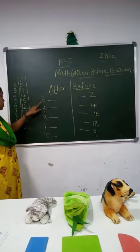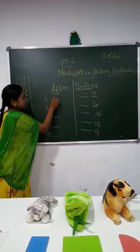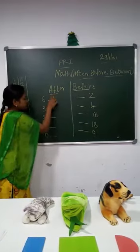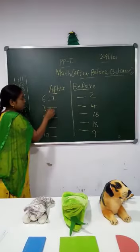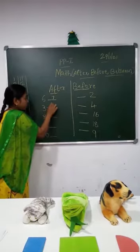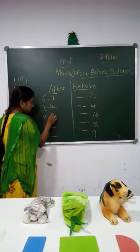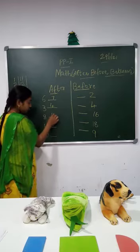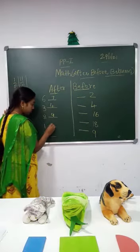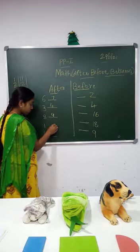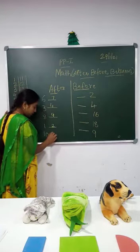Now we see for the after number. Here is six — after six you have seven. Here is three — after three you get four. Here is eight — after eight you get nine. Here is one — after one you get two. Here is ten — after ten you get eleven.